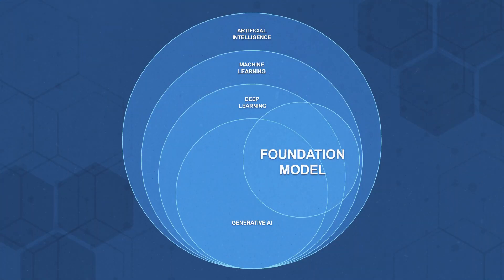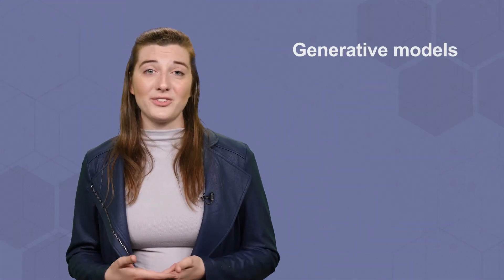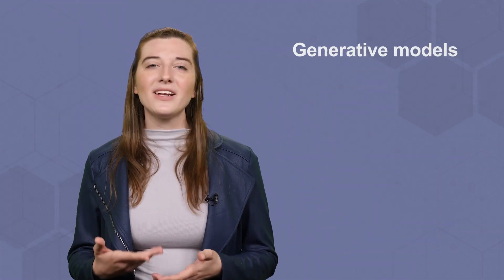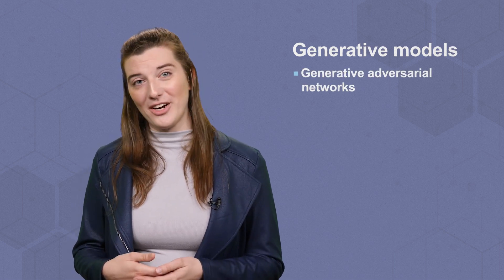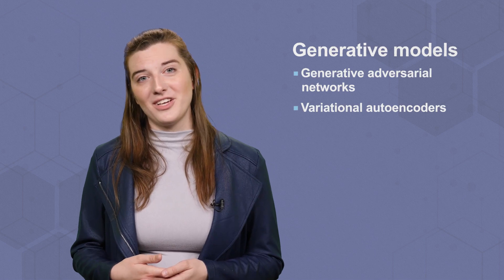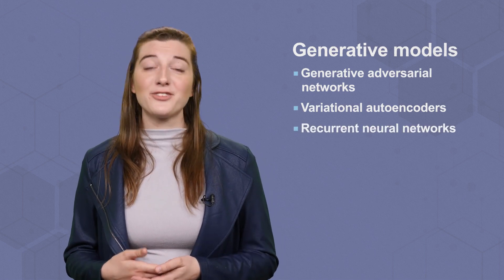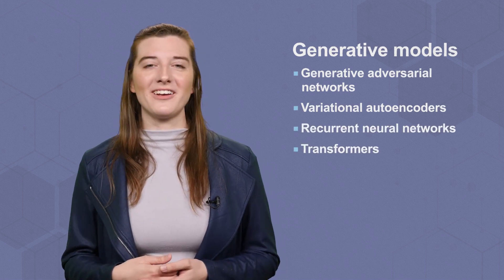These next terms aren't inherently a subset of any one category above, but are necessary to understand before we go any further. Foundation model is a general term for any off-the-shelf AI model that can be fine-tuned for a range of tasks, depending on your goal. Generative models can have different architectures, depending on the task at hand. Examples include generative adversarial networks, variational auto-encoders, recurrent neural networks, and transformers, which we'll dig deeper on.